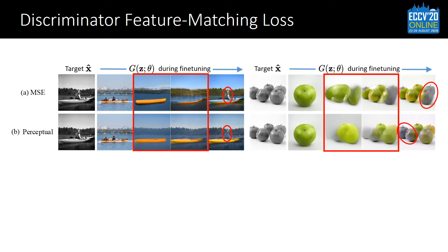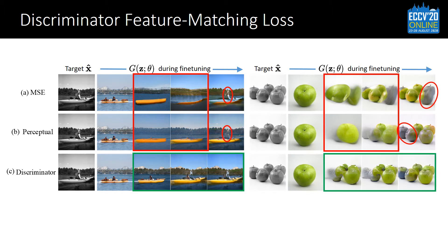With the discriminator loss, the reconstruction process is more natural and looks like image morphing, and the restored results are more accurate. However, fine-tuning all parameters of the generator simultaneously could cause information lingering artifacts, where the missing information like color does not shift along with the content during reconstruction, as shown in the red circle.